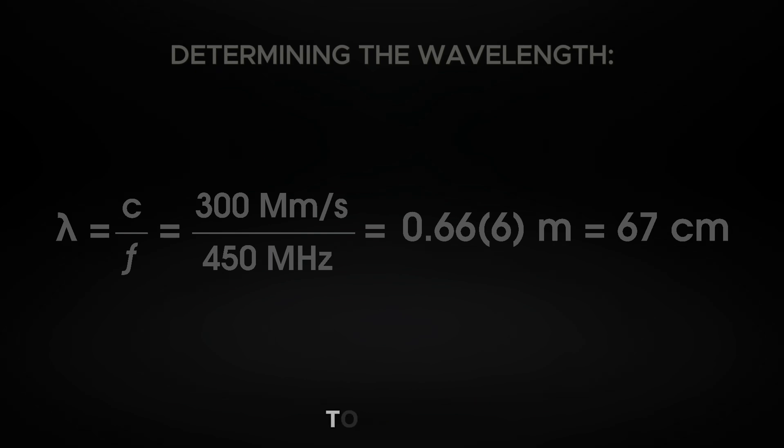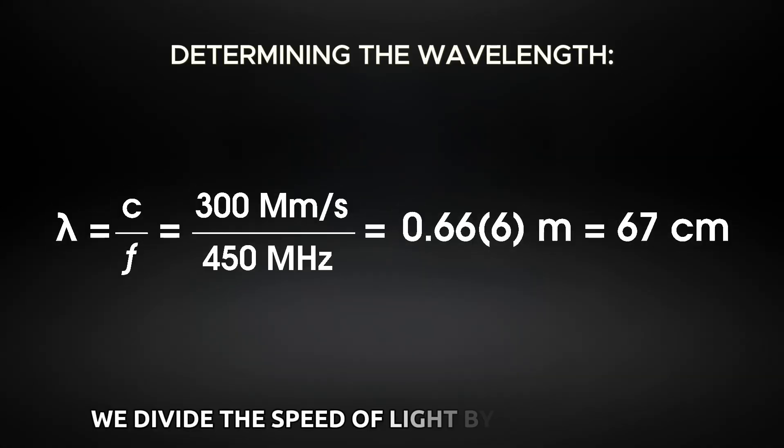To do this, we divide the speed of light by the frequency. Lambda equals c divided by f equals (300 megameters per second) divided by (450 megahertz) equals 0.666 meters, approximately 67 centimeters. We will make the loop from a conductor of this length.